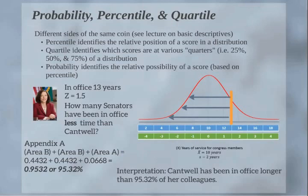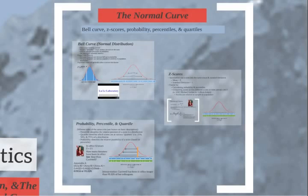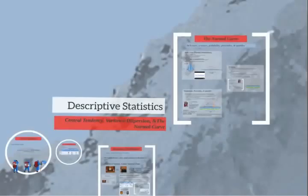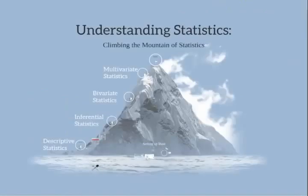To interpret this: Cantwell has been in office longer than 95.32% of her colleagues. So this is the normal curve, the bell curve, z-scores, probability, percentiles, and quartiles. This is really important to understand — get this down before we move on to inferential statistics, because this underlies all of inferential statistics. That concludes our session on descriptive statistics. We'll be moving on to inferential statistics next, and that is your Daily Dose of Statistics.